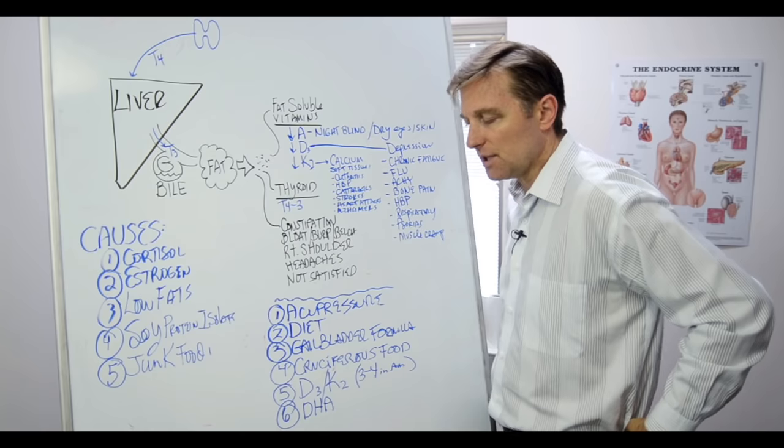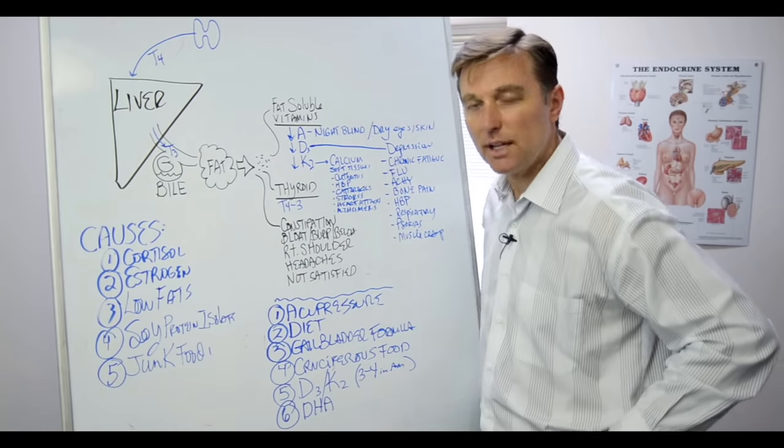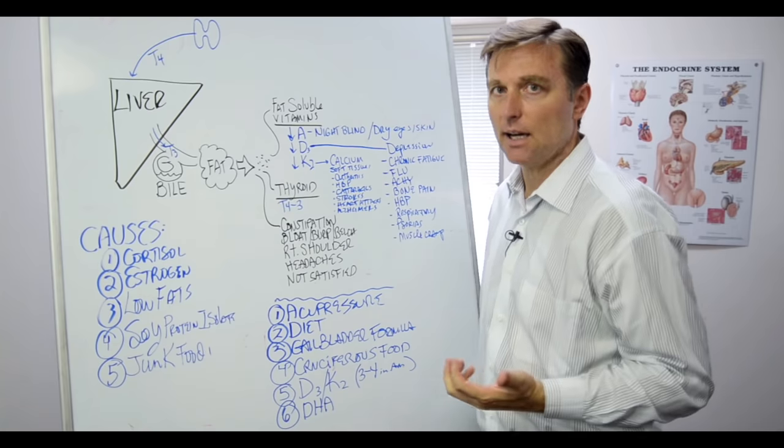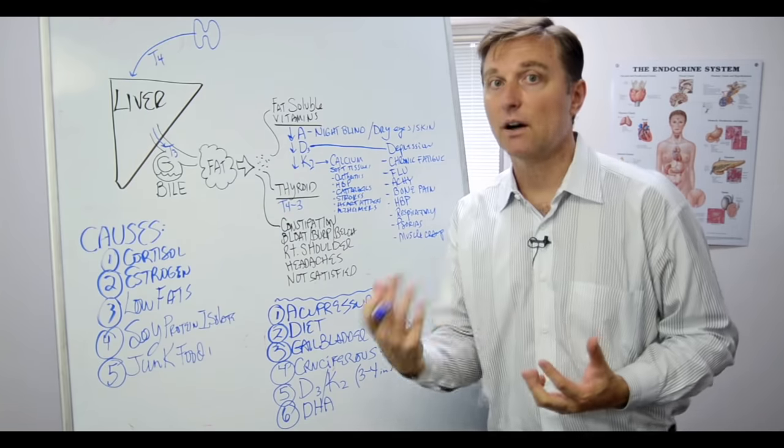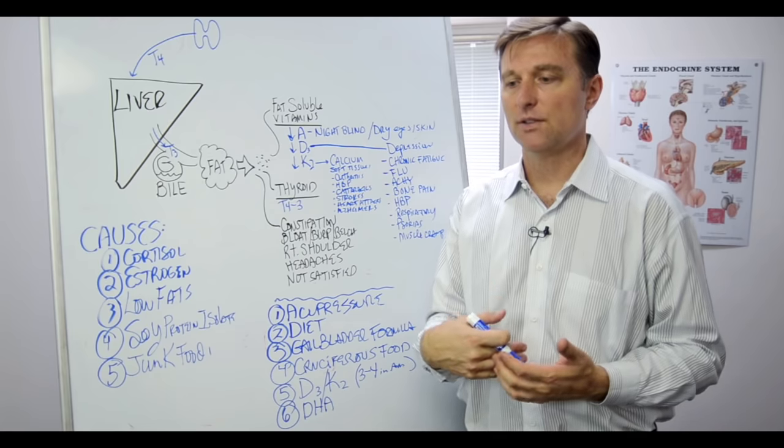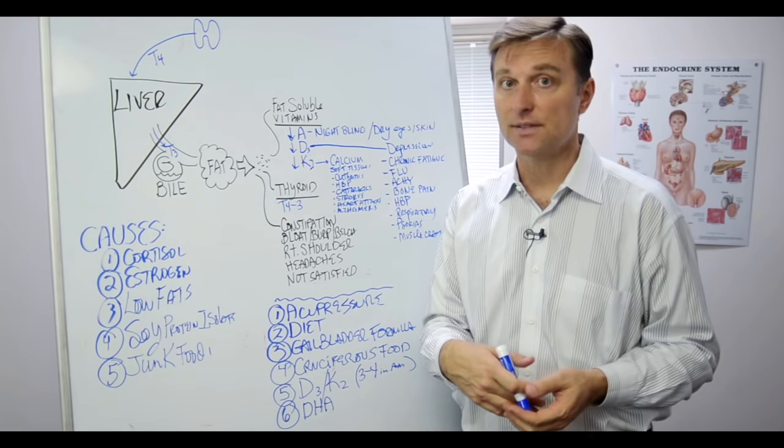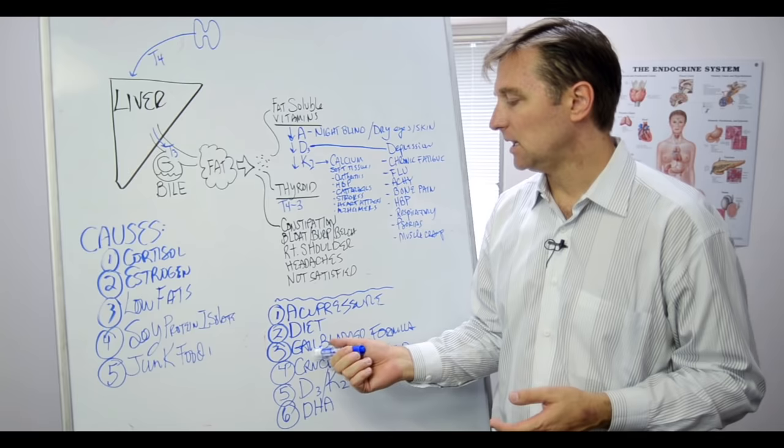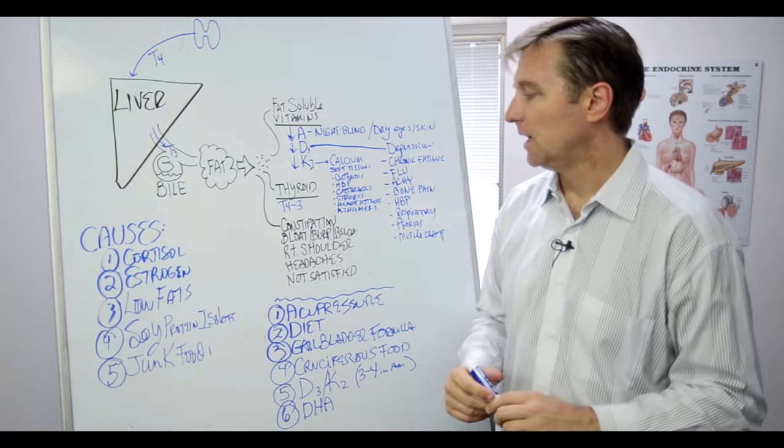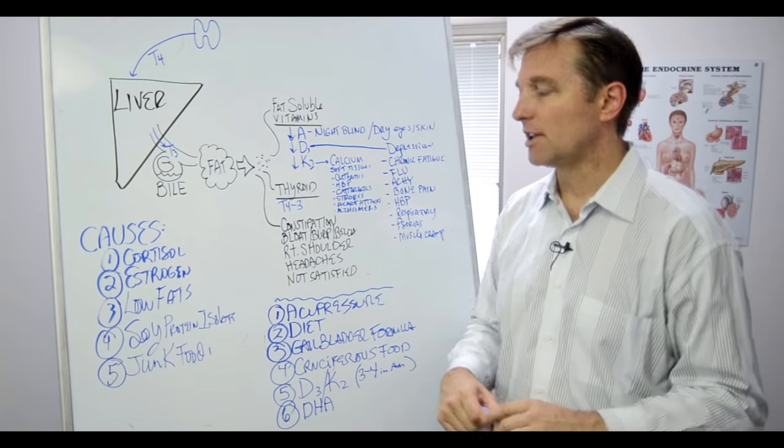The only contraindication, let's say you take gallbladder formula and you get heartburn. What that means, since gallbladder formula is very alkaline, and let's say your stomach is already too alkaline, then it could create some heartburn because your body's trying to compensate. If that happens, then you would stop taking this and switch to something called betaine hydrochloride. And that's just a side note that's rare.